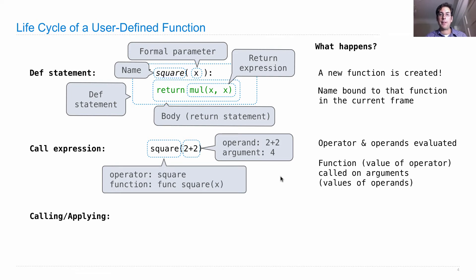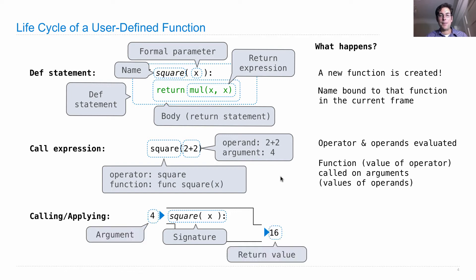Then, once those are evaluated, the function, which is the value of the operator, is called on the arguments, which are the values of the operands. Okay, so this last part about calling the function on the arguments, we can draw a picture like this, where we write the signature of the function in a pipe or a tube, the argument is passed in as the input, the return value is what we get out of the function, and sometimes we saw there are side effects, but not in the square function. The square function is a pure function.